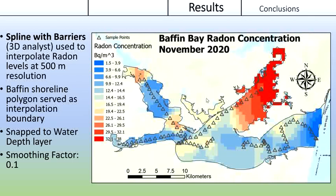Next, I created the radon interpolation raster using the spline with barriers tool. The boundary in this case was the Baffin shoreline, and I made sure to snap it to the water depth layer to streamline any future calculations. Here we get the first glimpse of an interpolated distribution of radon across Baffin Bay. The lack of sampling points is certainly adding some uncertainty, but the general trends are showing up — higher radon in the northern arm of the bay, lower towards the Laguna Madre, and a few high spots here and there.